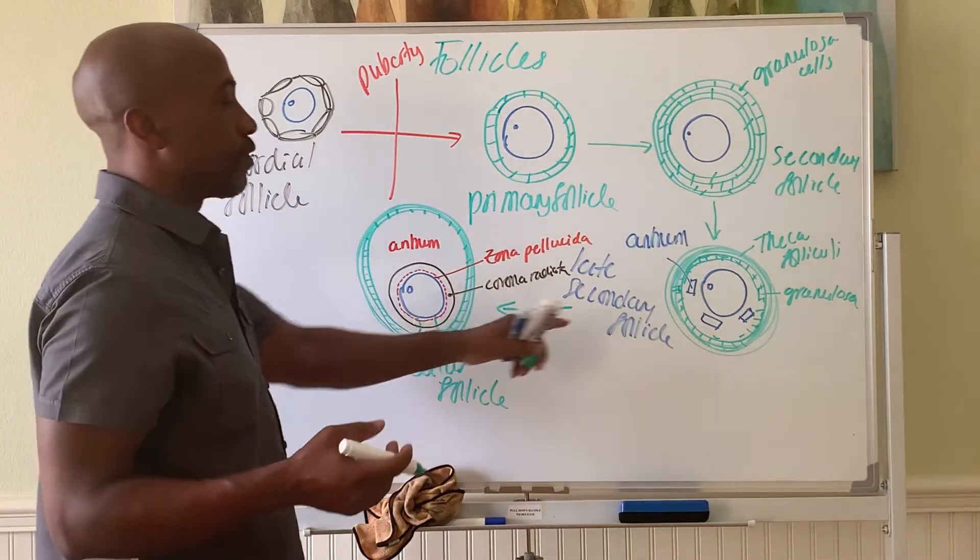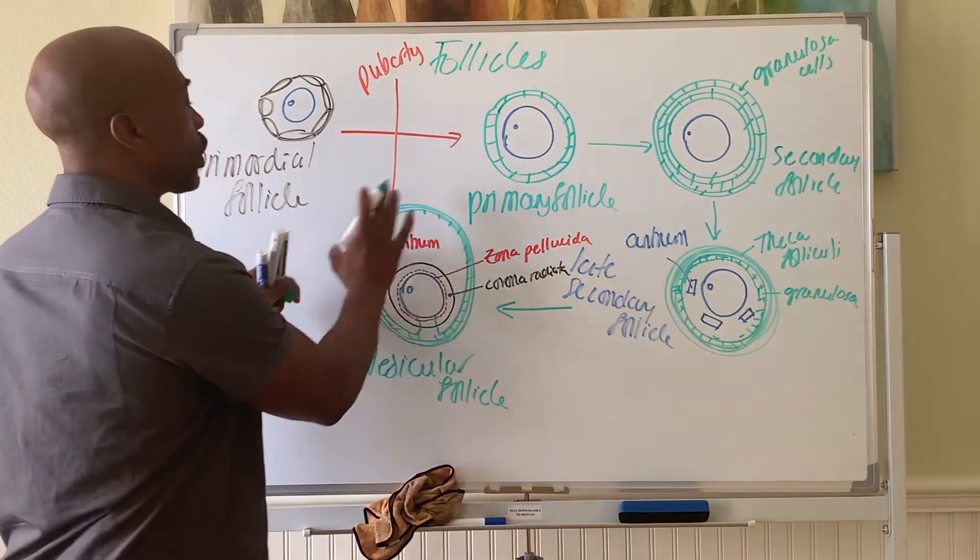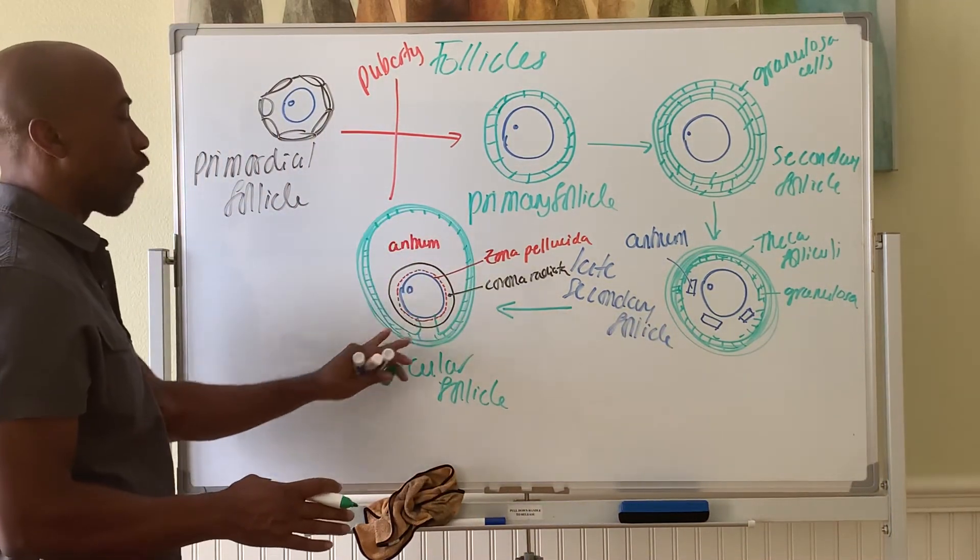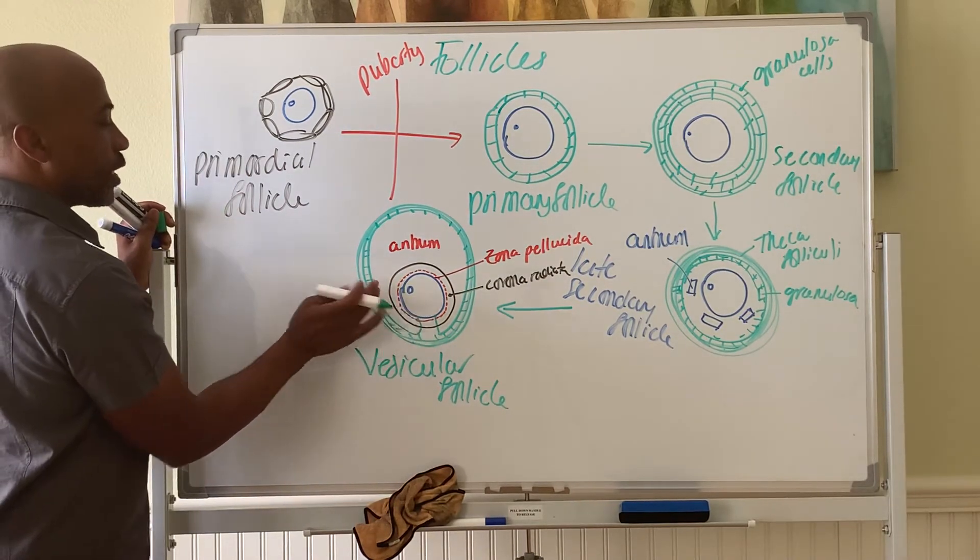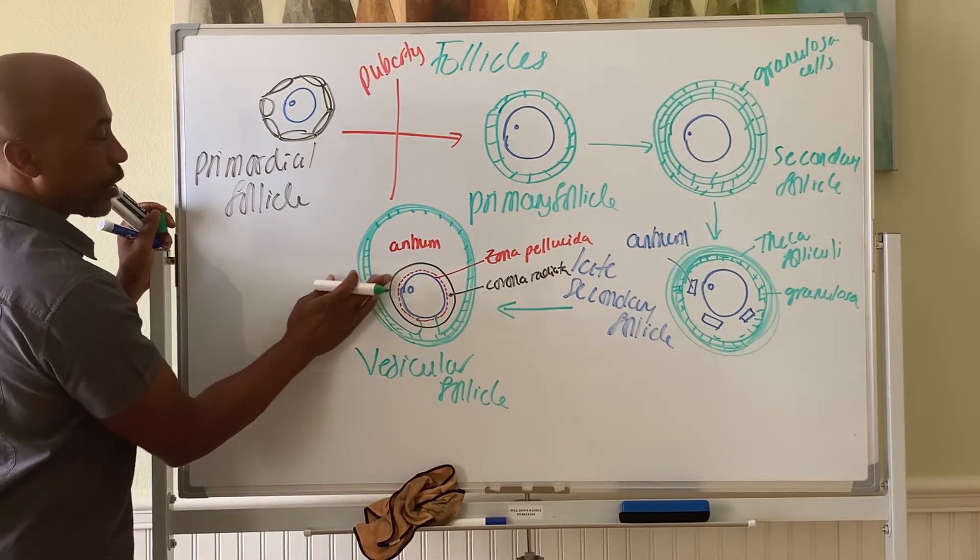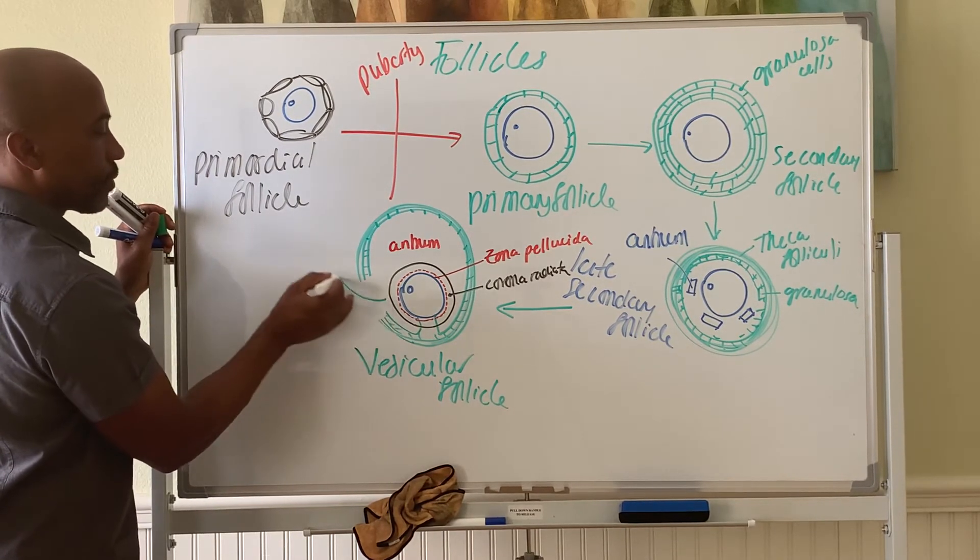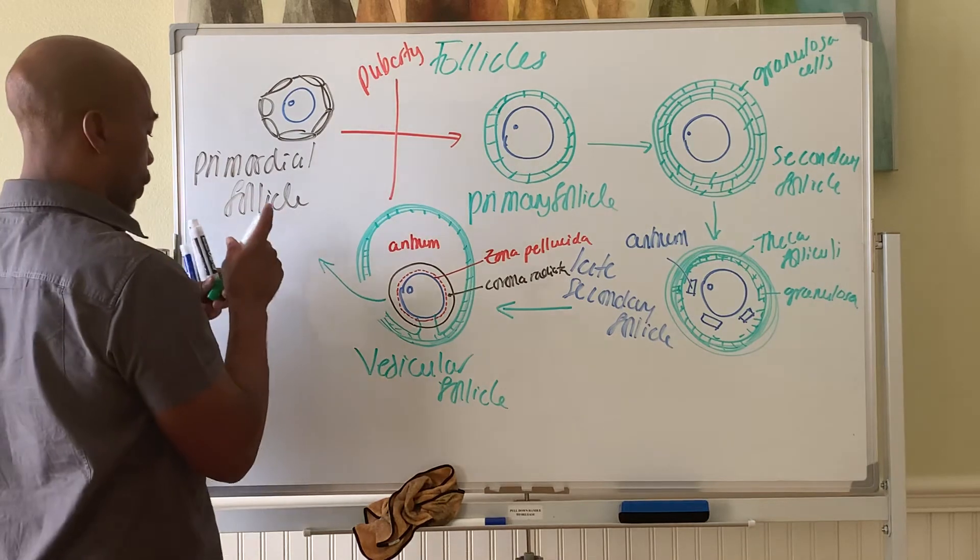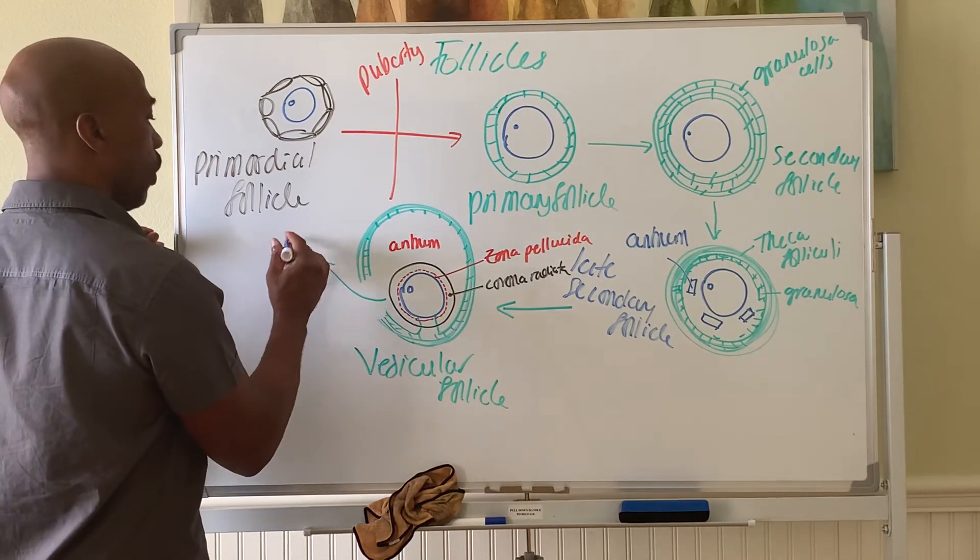Several of these will be prodded by FSH to try to mature to become what's called the dominant or vesicular follicle. And that follicle is the one that will rupture to do an ovulation.